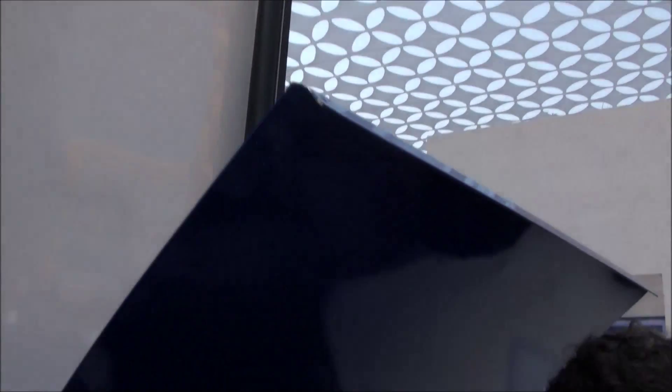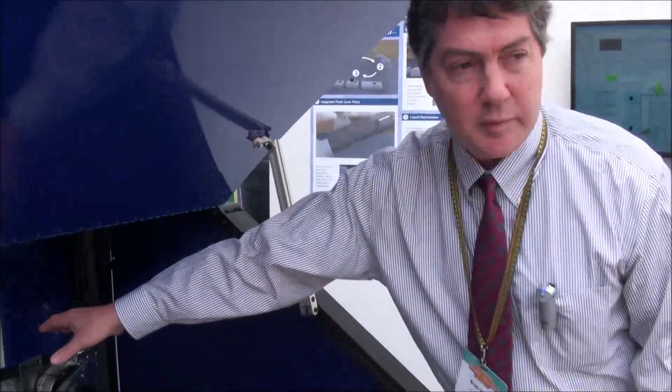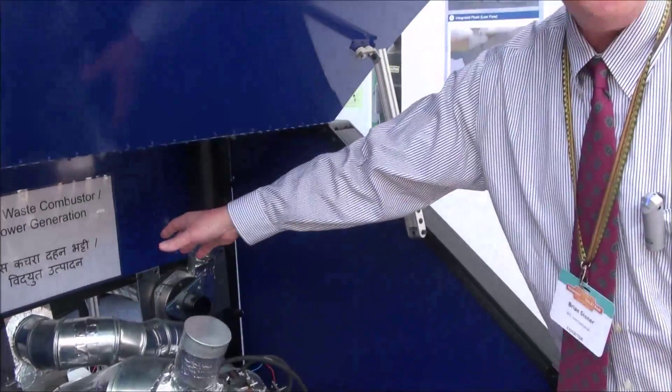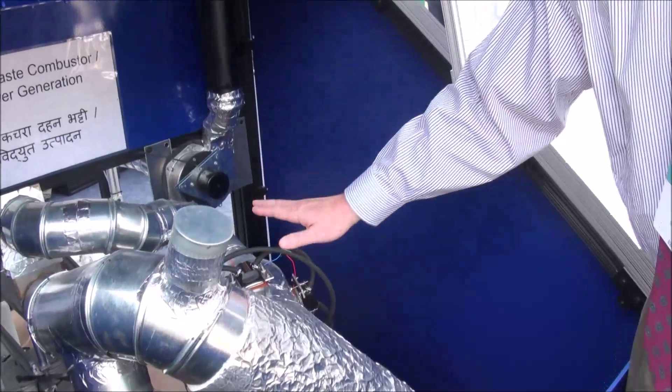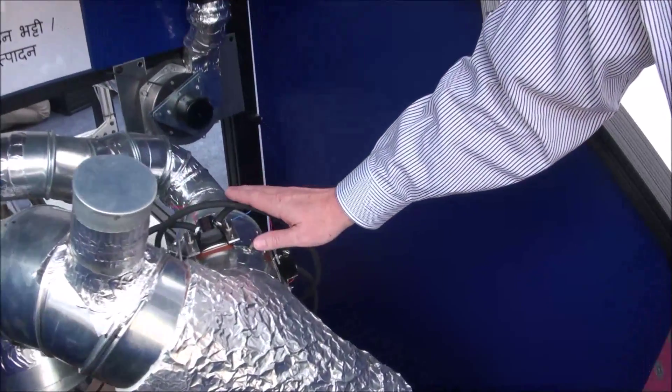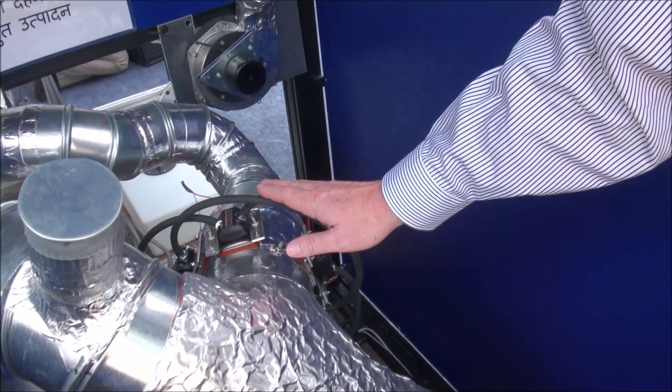The exhaust from the combustor is then manifolded back to the auger, where it dries the feces that's coming up. And then we use these thermoelectric modules to turn the thermal energy into electrical energy.